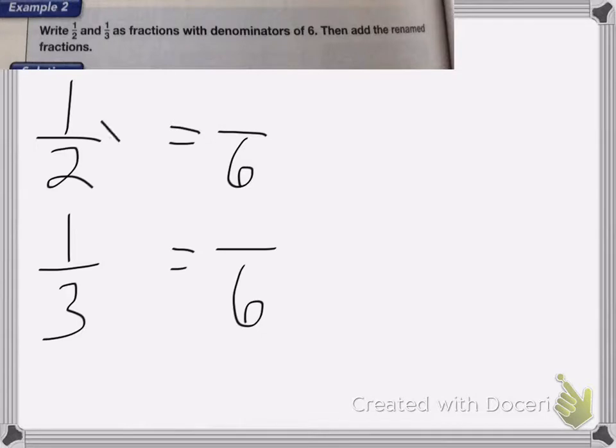Okay, so I need to multiply both these numbers by something to get 6. Well, we know that 2 times 3 is 6, so whatever I do to the bottom, I have to do to the top. 1 times 3 is 3, so 1/2 is the same as 3/6.